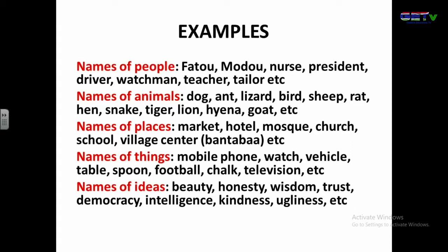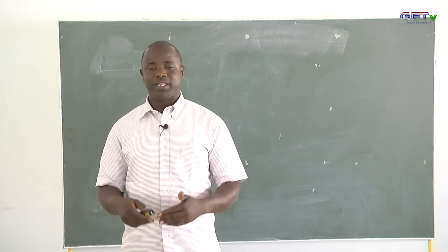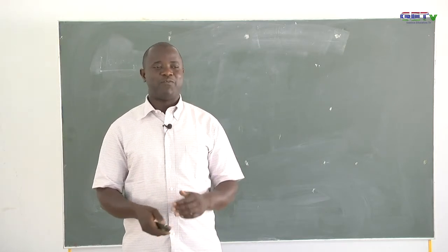Names of things — nouns also name things. For example, mobile phone, watch, vehicle, table, spoon, football, television, etc. All these are nouns that name things. Nouns also name ideas. For example, beauty, honesty, wisdom, trust, democracy, intelligence, kindness, ugliness — all these are examples of nouns. Therefore, we understand that any word that gives a name, we can call it a noun. A noun is a name of anything.